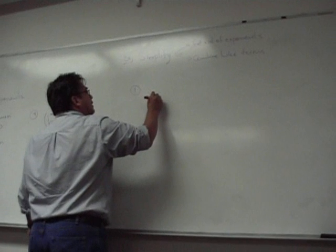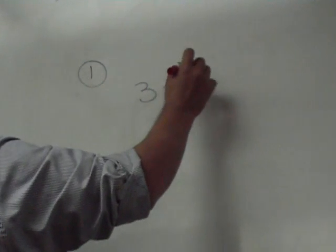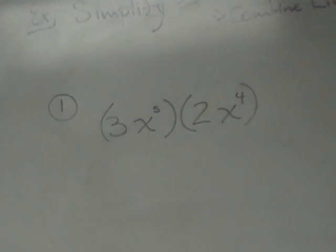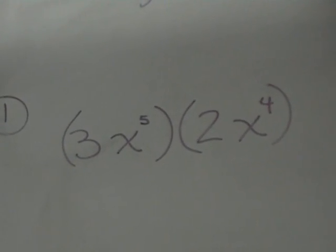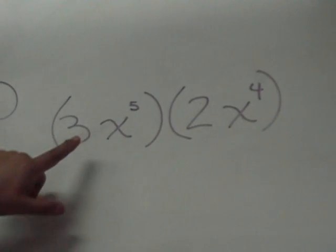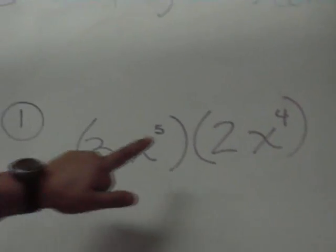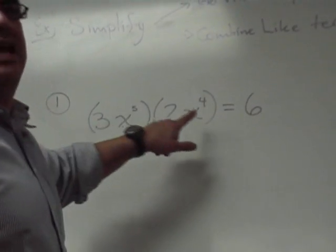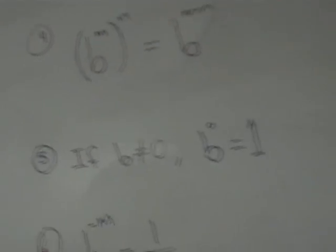Suppose that I gave you 3x to the fifth times 2x to the fourth. So you have two monomials that you're going to multiply. When you multiply expressions of this kind, you multiply the coefficients together and then you use the properties of exponents. So here I have 3 times 2, and x to the fifth times x to the fourth. You add them up.